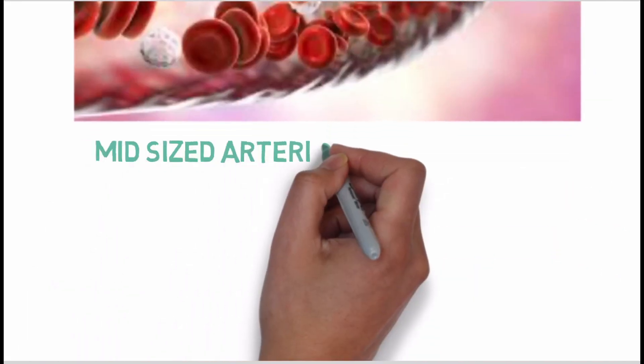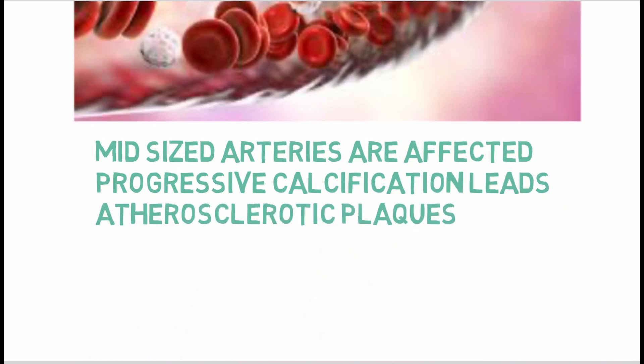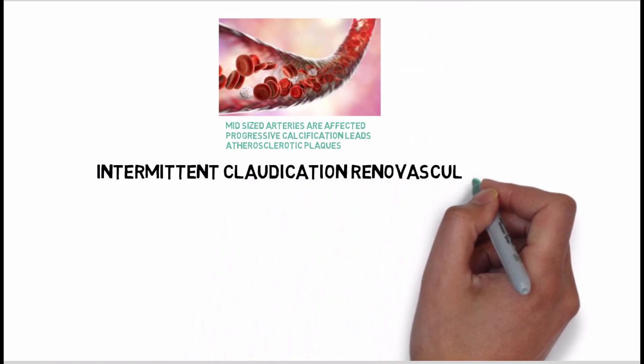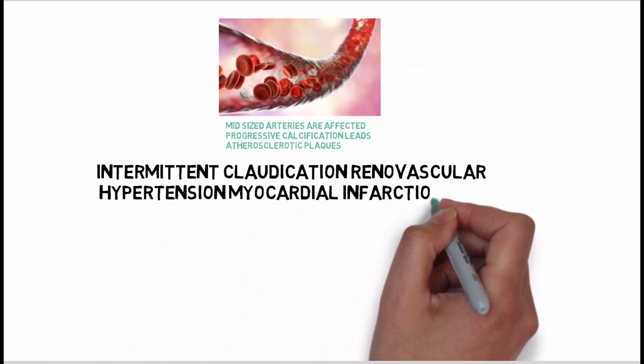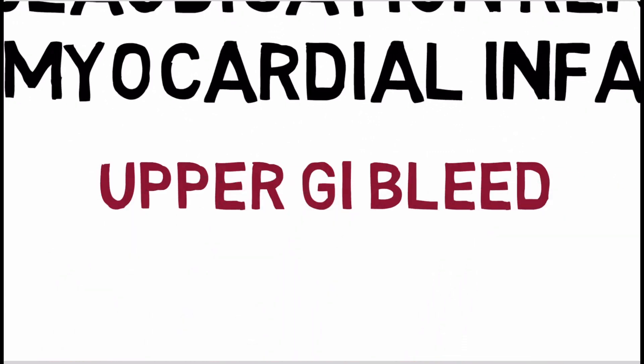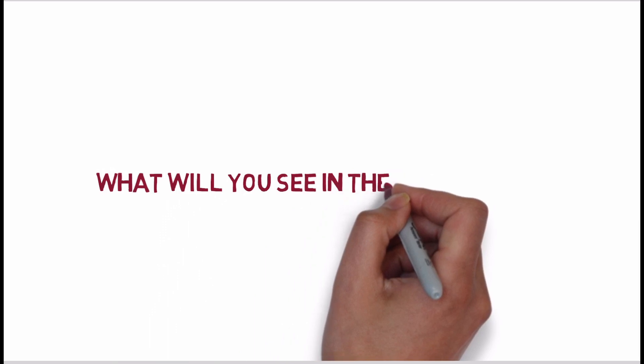Moving on to the cardiovascular system: mid-size arteries are affected, and progressive calcification leads to the formation of atherosclerotic plaques. Intermittent claudication, renovascular hypertension, myocardial infarction, and stroke can occur at an earlier age and can be a cause of death at a younger age. Calcified blood vessels of gastric and intestinal mucosa lead to increased chances of GI bleeding.